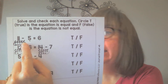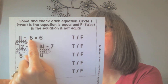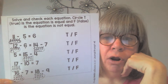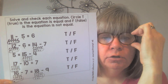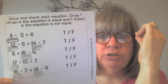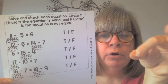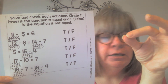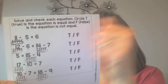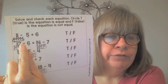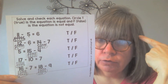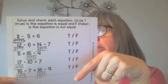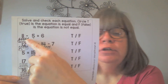The first equation is a takeaway question: 11 take away 5 equals 6. You might already know the answer — true or false? Remember, true means it's correct and false means it's not correct. If you already know without having to figure it out, you're using mental math — good for you! Go ahead and circle T or F.